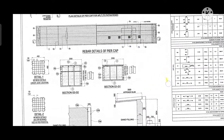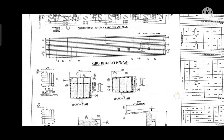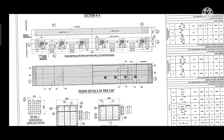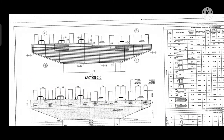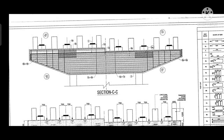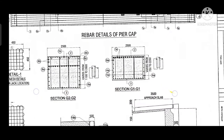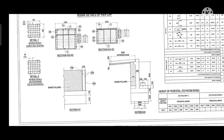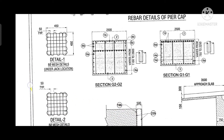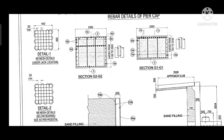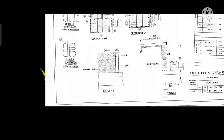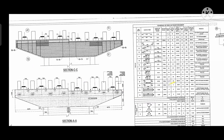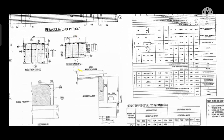Also, in the BB section of the drawing, we have the mesh position, and the length and width of the mesh — everything is given in the drawing. This is the jack location position and the step section G1 and G2, given by the section which is useful for the step position.